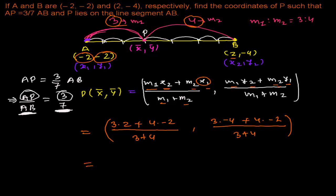So in the next step we can now write 3 times 2 that is 6 plus 4 times -2 that is -8, -8 and then 3 plus 4 that is 7 and here 3 times -4 that is -12 and 4 times -2 that is -8 divided by 7. So my coordinate is going to be now here 6 minus 8 that is -2 over 7 and -12 and -8 that is -20 over 7. So we got the coordinate as -2 over 7 comma -20 over 7. So this is the coordinate what we need to find out of the point P.